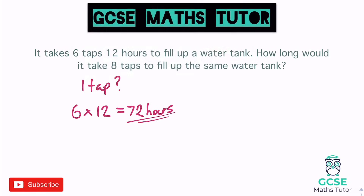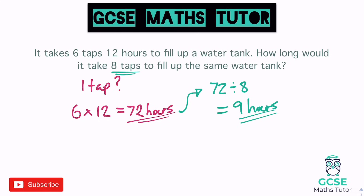Now we've got eight taps, so it's going to be eight times faster. 72 divided by eight leaves us with nine hours. It's faster — gone from 12 hours down to nine — which makes sense because we've got more taps.